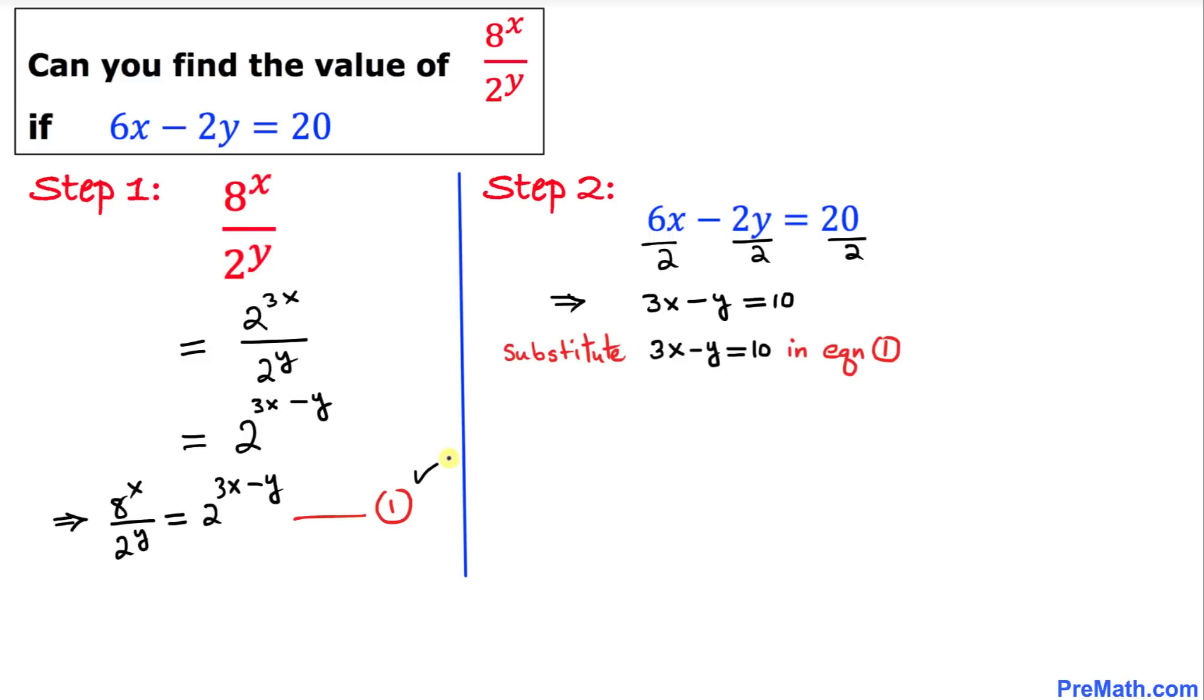Here is equation 1. I'm going to replace 3x minus y by 10, so this equals 2^10. Thus, we got 8^x divided by 2^y equals 2^10, and that is our answer.